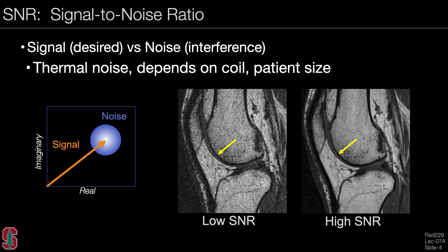To introduce the concept of signal-to-noise ratio, signal is the desired component of an image and noise is interference. Most of the noise comes from thermal noise and depends on a number of factors, including the coil and the patient size. We can see signal as a vector and noise as a cloud, a probability distribution of where the signal might be altered to. Looking at images, you can see examples of low signal-to-noise ratio and high signal-to-noise ratio. The impact of having noise is that it can make it difficult to depict boundaries or other features in images. Noise has a speckly-type pattern and is random.